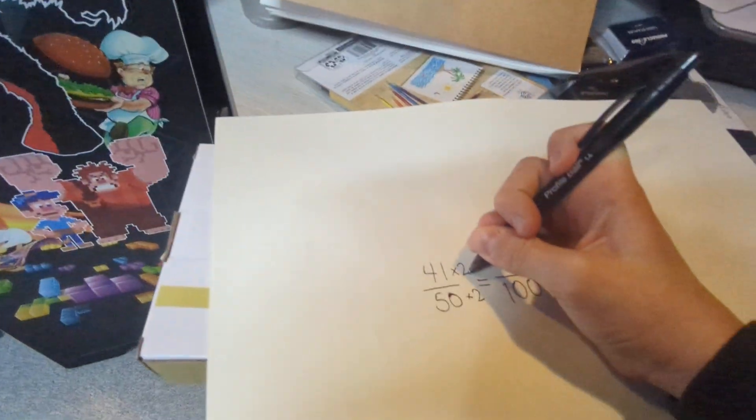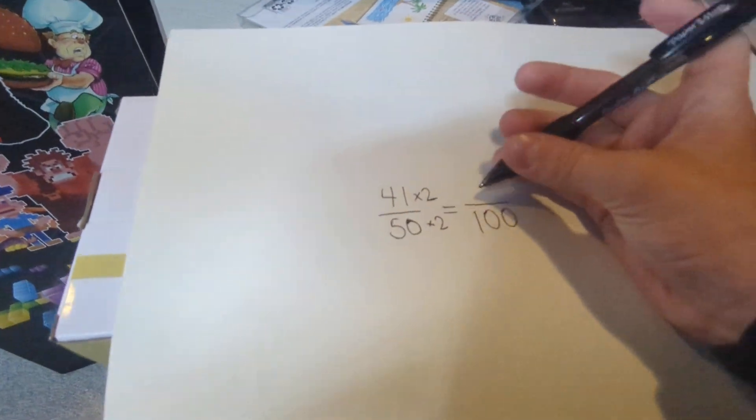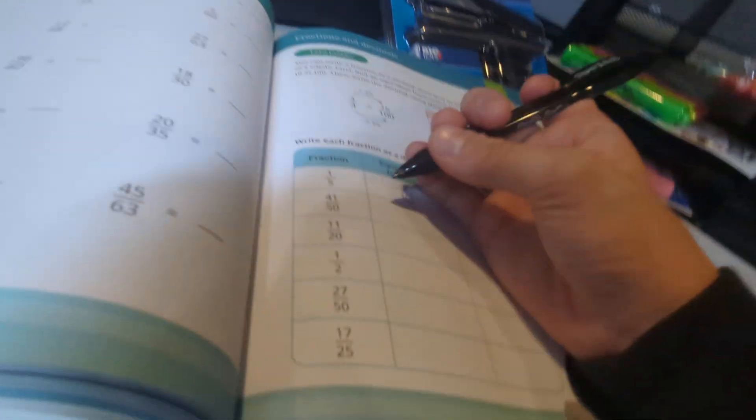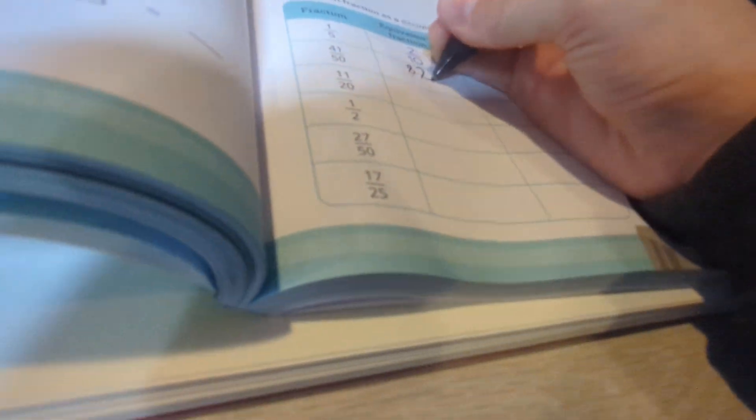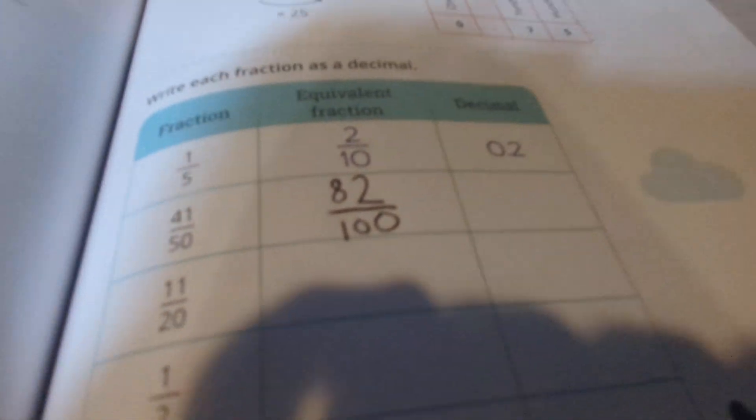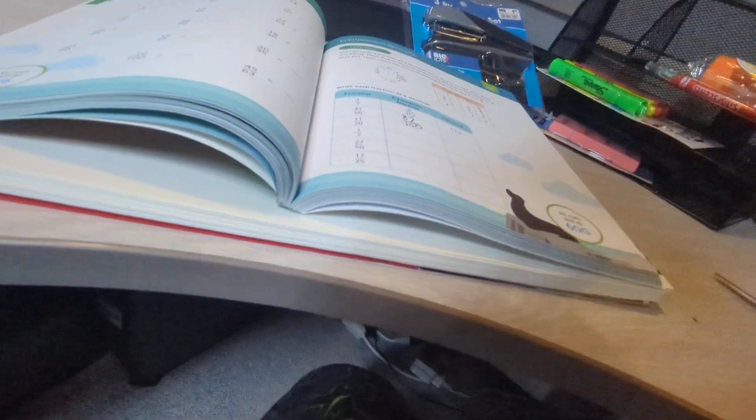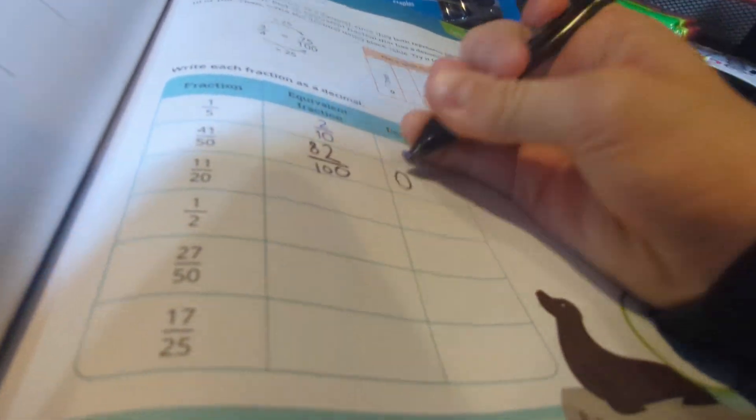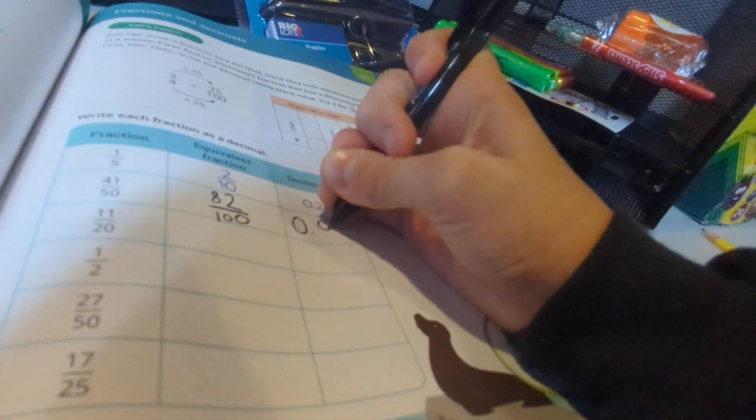41 times 2 is 82. So your answer is 82 hundredths for this one. Now, see how I made it 82 hundredths and a decimal for this 0.82.